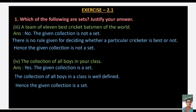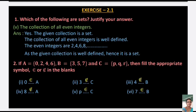Fourth one: the collection of all boys in your school. It is a set because the collection is well defined — all boys in the school follow a clear rule. Fifth one: the collection of all even integers. You know that even integers are 2, 4, 6, 8, and so on. Since they follow a rule, the collection of all even integers is well defined and hence it is a set.